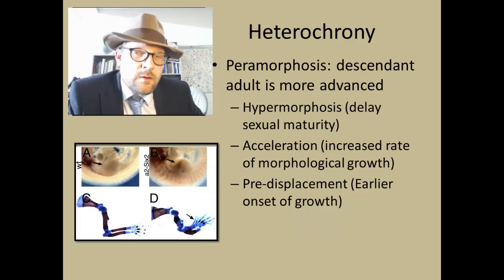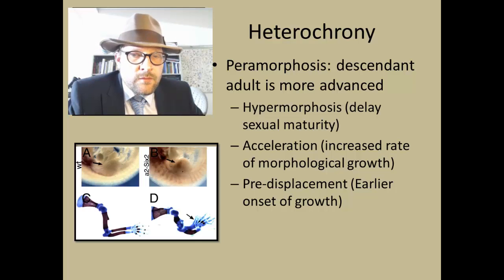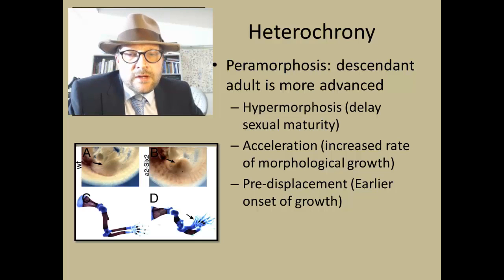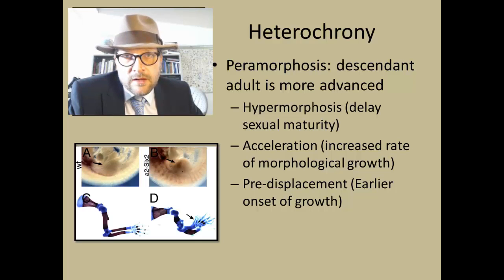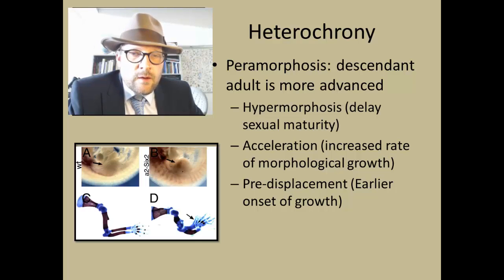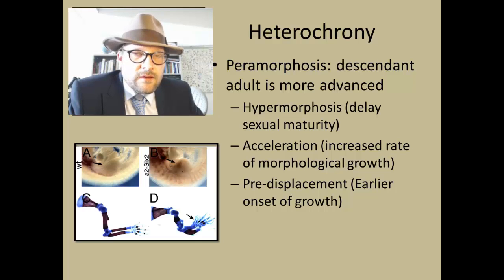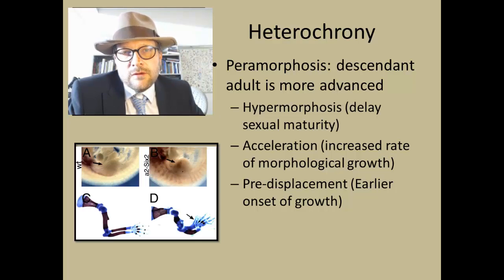Another type of heterochrony is paramorphism, where the descendant adult is more advanced. Examples include hypermorphism — delaying sexual maturity until much later — as well as acceleration, or increasing the rate of morphological growth, or pre-displacement, which is the earlier onset of growth. An example would be having limbs or fingers repeated more often — that would be a more derived trait where instead of stopping the growth, it continues, and that is an example of paramorphism.